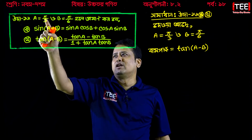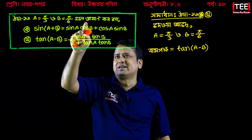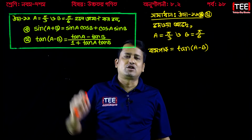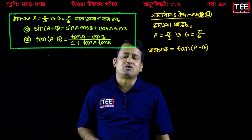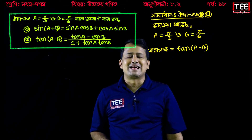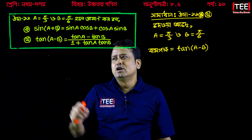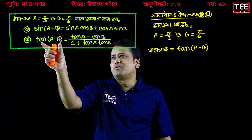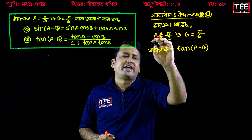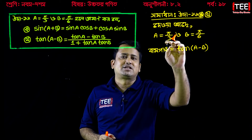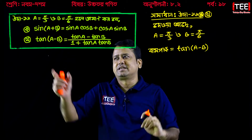A equals pi by 3 and b equals pi by 6. We use 1 plus tan a · tan b. So a is pi by 3 and b is pi by 6.